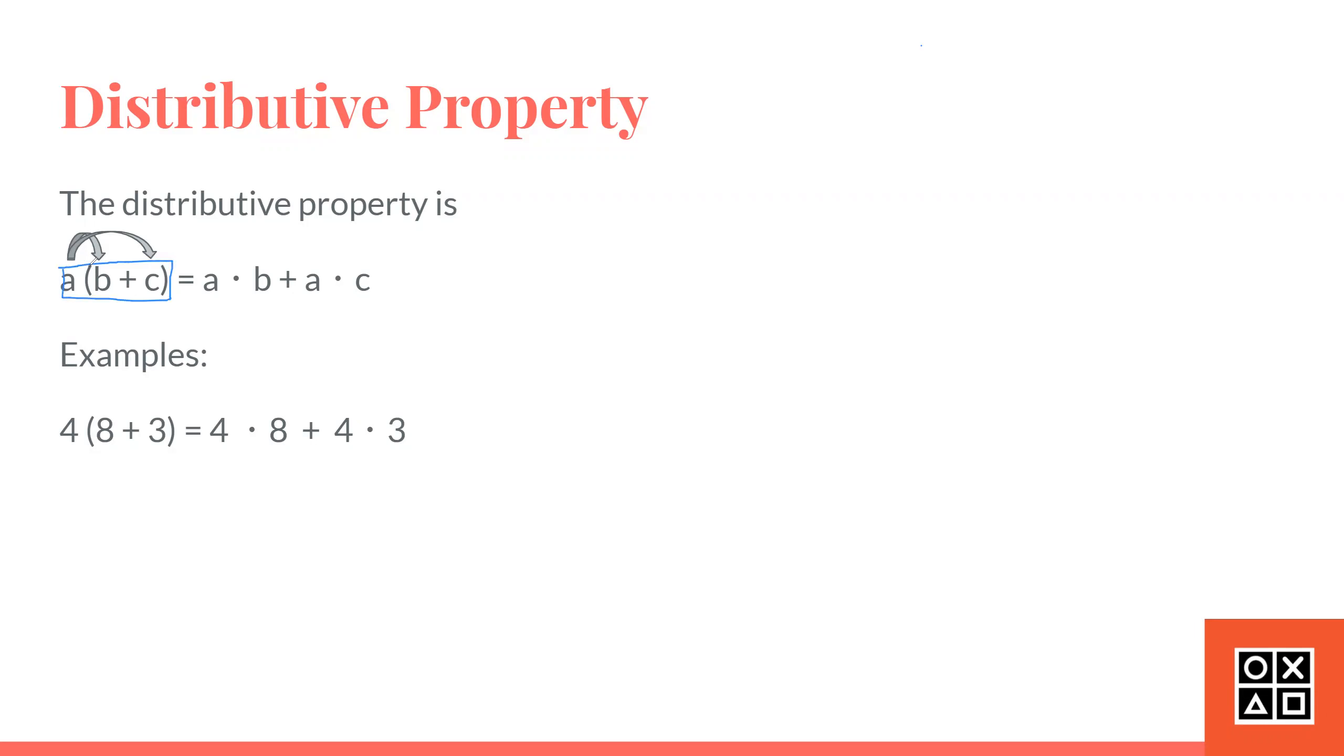Basically, the distributive property is stated in this form right here. So, A times B plus C, in parentheses. By the way, all that's happening here is A is multiplying by B plus C. So, as you can see by the arrows drawn there, all A is doing is it's distributing with B, and it's distributing with C. As it's seen right here. A times B plus A times C. That's all the distributive property does.